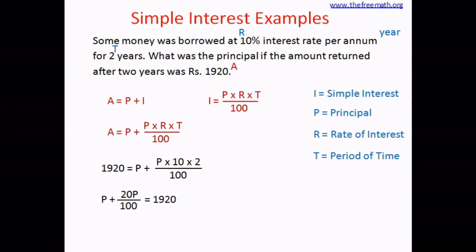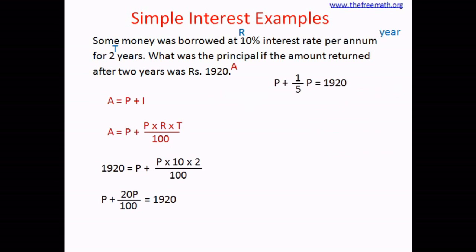Since 20 divided by 100 simplifies to 1 over 5, the equation becomes P plus one-fifth P equals 1,920. The first P has no written coefficient, which means its coefficient is 1. So the equation is really 1P plus one-fifth P equals 1,920.